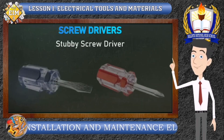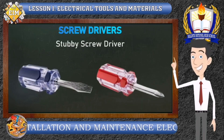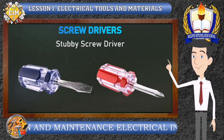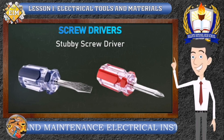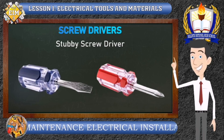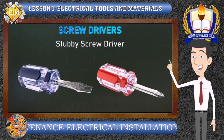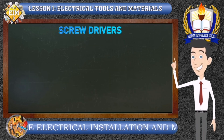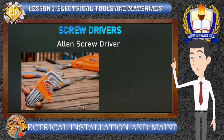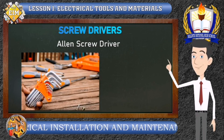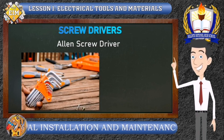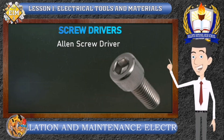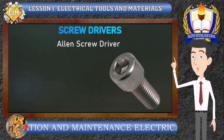Then we have the stubby screwdriver, which comes in either standard or Phillips type with a short shank or blade and a shorter handle, used to turn screws in tight spaces where a standard screwdriver cannot be used. And the last is the Allen screwdriver or wrench, which is in the shape of a screwdriver or a wrench, and its function is to drive screws with a hexagonal slot head.